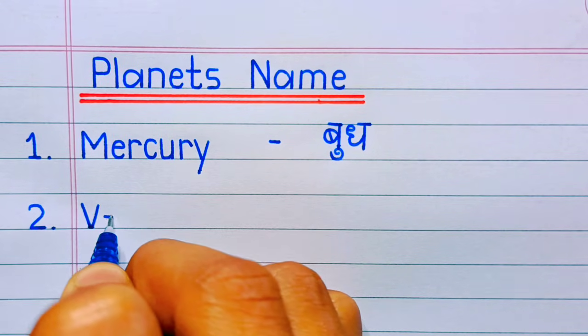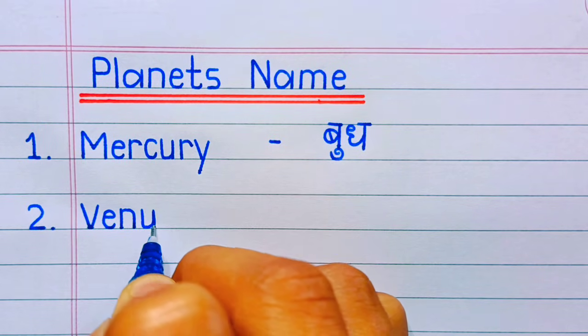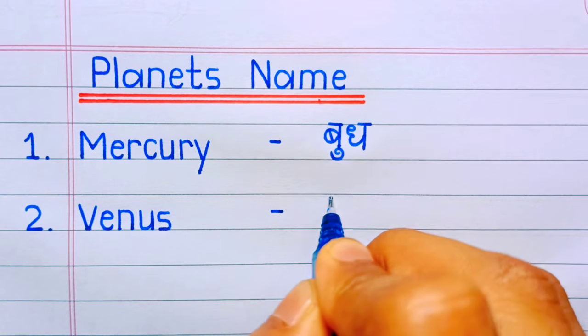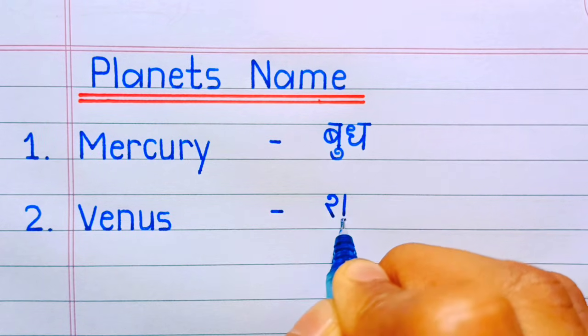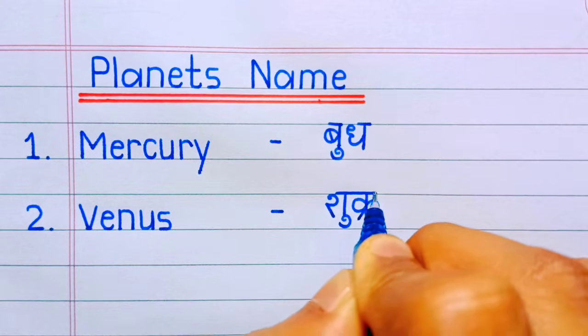Number two: Venus. V-E-N-U-S, Venus. Venus means Sukra.